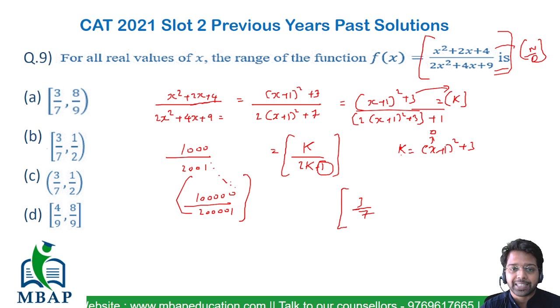You cannot assume it to be exactly 0.5 because the denominator is always one more than twice the numerator. The larger the value of k, the closer the value will be to 0.5, but this will always be less than 0.5. So the range is 3/7 to slightly less than 1/2. Hence the answer is option B.